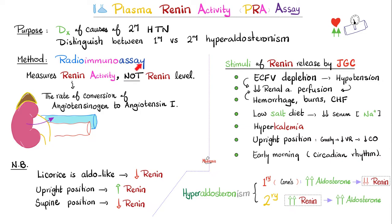The method used is radioimmunoassay. It measures not the level of renin but the activity of renin — by measuring the rate of conversion of angiotensinogen into angiotensin 1. The greater the angiotensin 1 produced, the greater the activity of renin.